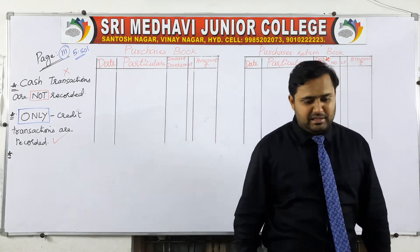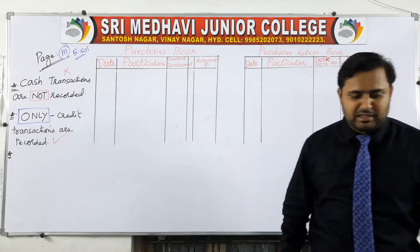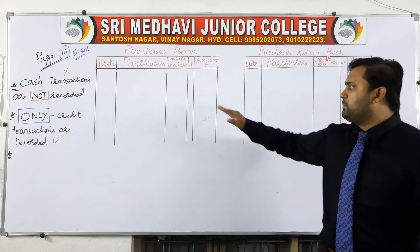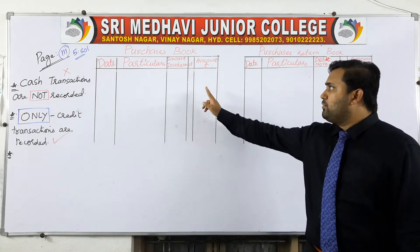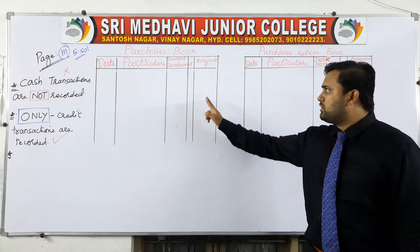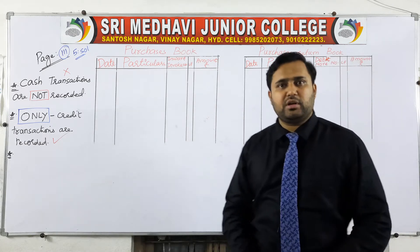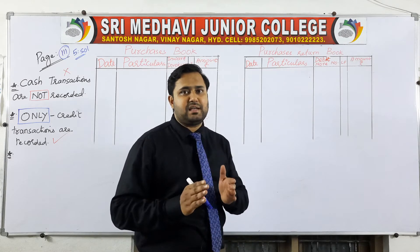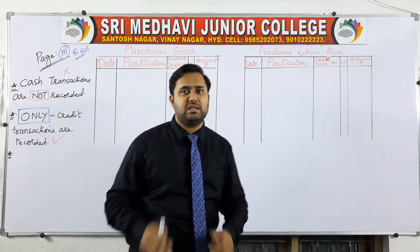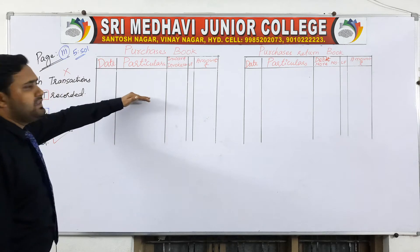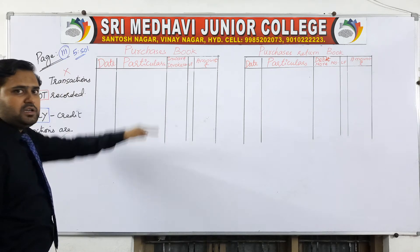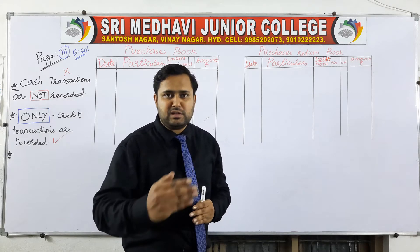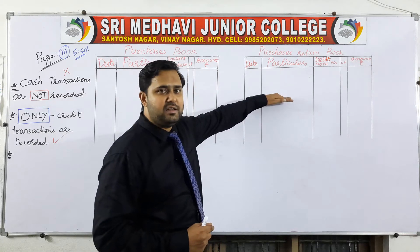The question asks you to enter the following transactions in the purchase book and purchase returns book. You have to prepare two separate books. One book is for purchases, called the purchase book, and the other is the purchases returns book. All transactions related to purchases are recorded in the purchase book, and transactions related to purchase returns are recorded in the purchase returns book.